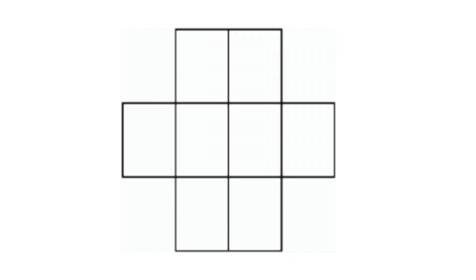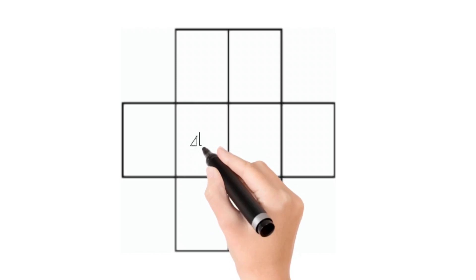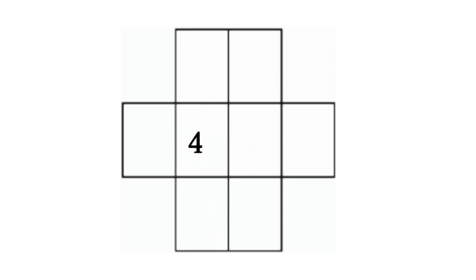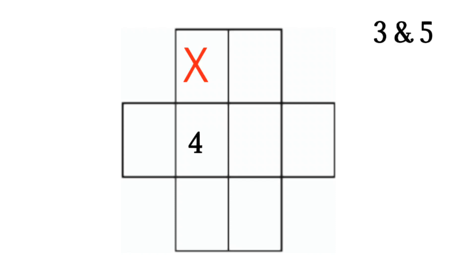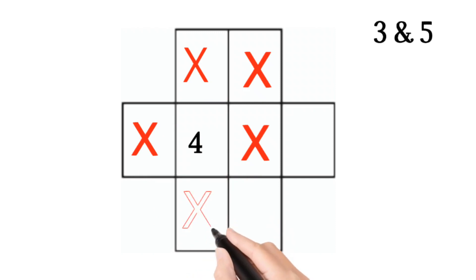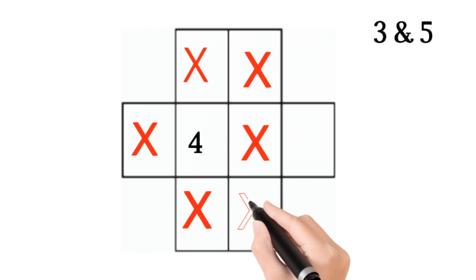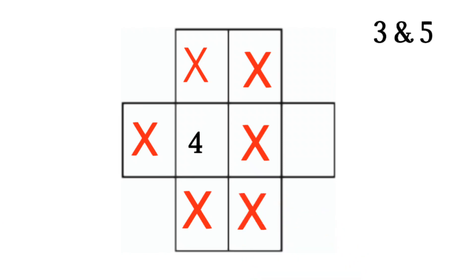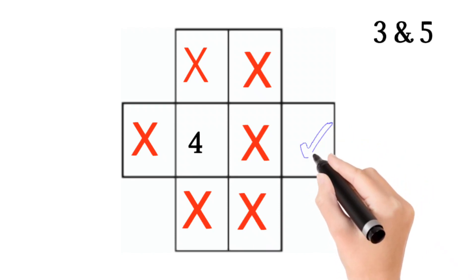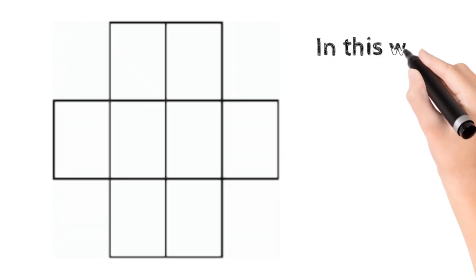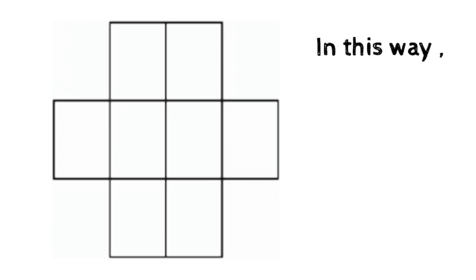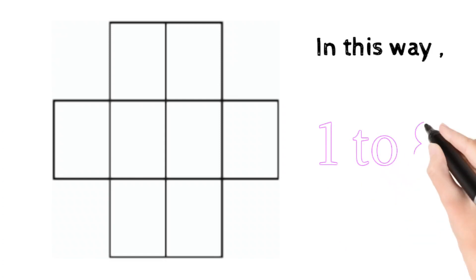Let me take one more example. Let me write four in this box. The conjugates of four are three and five. So three and five should not appear in any adjacent box — not horizontally, not vertically, and not diagonally adjacent to four. So three or five can only be filled in a box that is sufficiently far away. In this way, we need to fill all numbers from 1 to 8 in all the boxes completely.